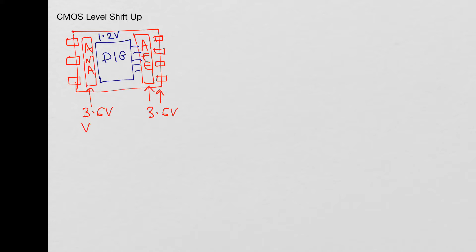So these are just examples of voltages. You could have two voltages: one we call VCC, and then the digital supply, the 1.2 volt supply, we call VDD. Now to translate signals between these two domains — when a signal has to go from the digital domain to the analog front end — it has to level shift up from 1.2 to 3.6 volts. In this video we'll be looking at that circuit and how it is constructed.